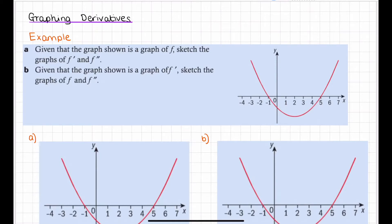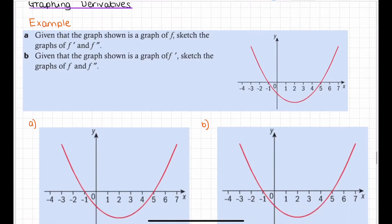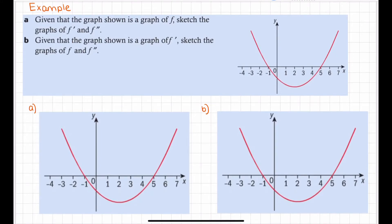A graph of a gradient function is different to the graph of a function. We'll go through two examples and see how you go. For this first example, we have this graph here — in part a, the graph of the function — and we want to graph the first derivative and the second derivative.